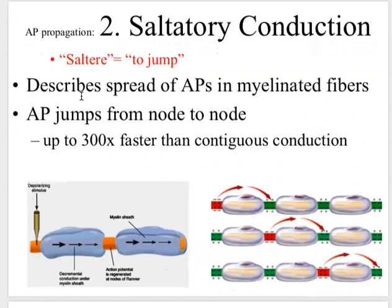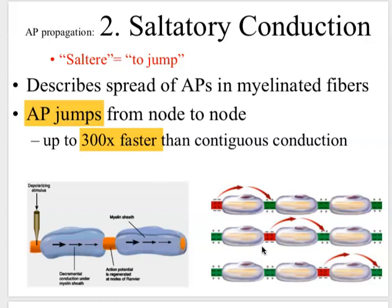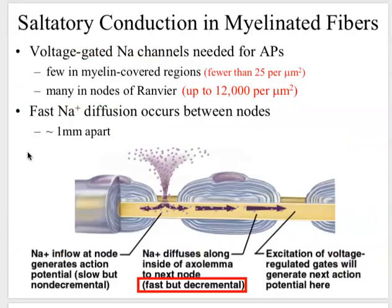Saltatory conduction comes from the Latin term 'saltare,' meaning to jump. This goes back to the nodes of Ranvier and the myelin sheath. Here is the axon of the neuron, and these sections are myelinated — these are the Schwann cells or oligodendrocytes, depending on whether it's the peripheral or central nervous system. The action potentials jump from one node to the next, which is much faster, skipping the myelinated portions of membrane.